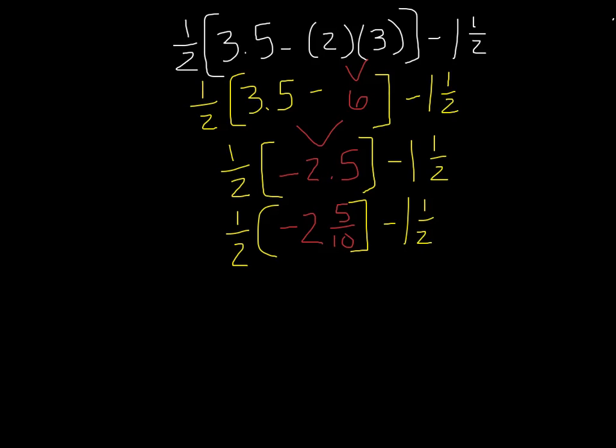Now in order to multiply, the next thing I need to do is to make it easier on myself. I'm going to change negative 2 and 5/10 into an improper fraction. So I'm going to multiply my 10 times my negative 2 to give me negative 20 plus 5, which gives me negative 25/10 as a fraction.